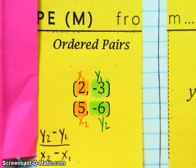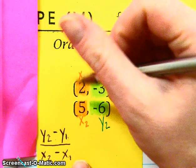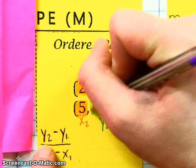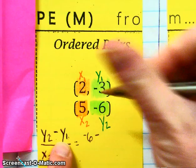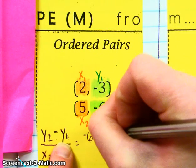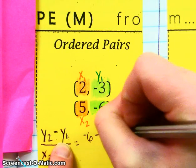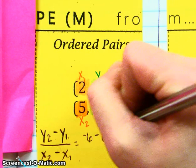So let's fill in the blanks here. Y sub 2, that would be this negative 6. And we're going to subtract Y sub 1, that's negative 3. Put a parenthesis there so we don't lose that negative.